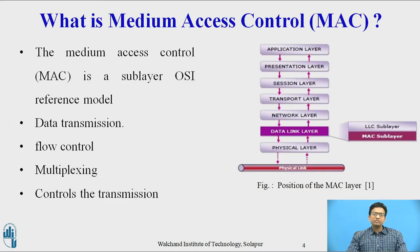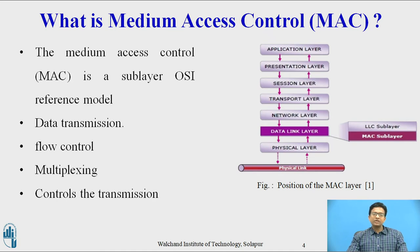What is medium access control? Medium access control is a sub-layer of the data link layer of the Open System Interconnection (OSI) reference model. As seen in the figure, the MAC layer is responsible for flow control and multiplexing for the transmission medium, and it also controls the transmission of data packets via remotely shared channels.